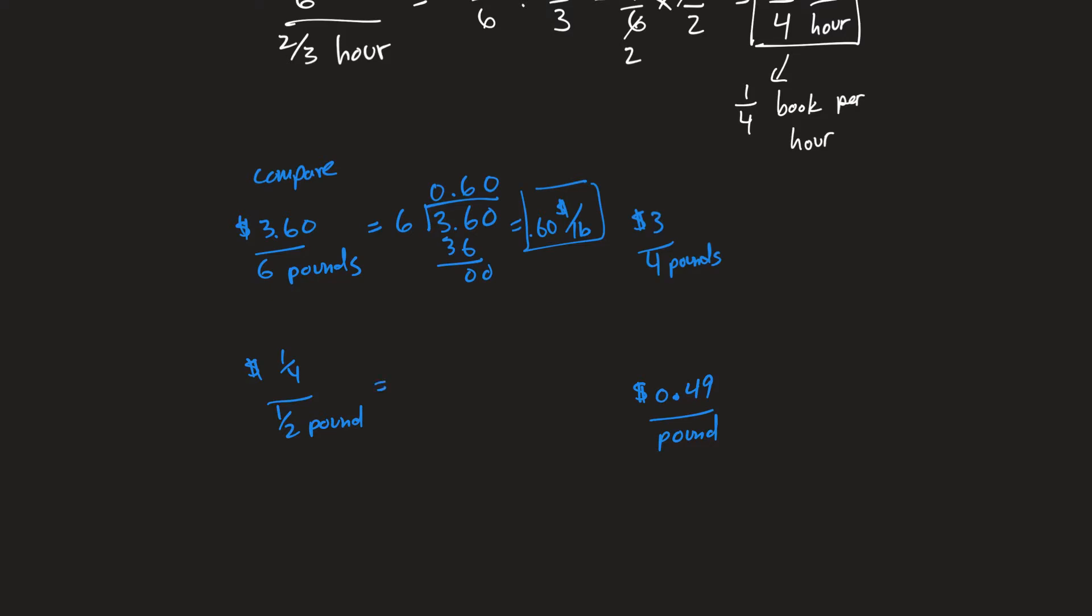This would be one-fourth divided by one-half. And that is, let's see, one-fourth times two over one, because you have to flip the second fraction. And I can divide both of these by two. That's one, and that's two. And so I end up with one-half dollars per pound.